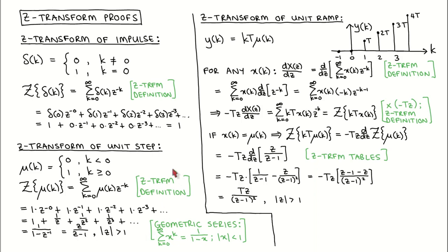For the proof of the Z-Transform of the unit ramp, we assume that the Z-Transform of the unit step is already proven. We define the unit ramp signal, then derive an intermediate result, which we combine with the Z-Transform of the unit ramp to get to the desired result. We define the unit ramp as k times T times the unit step, where T is the sampling period.